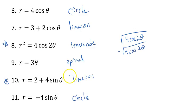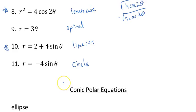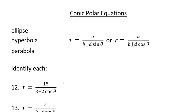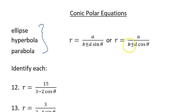Sometimes you may have to change your window — adjust x min, x max, y min, y max — to see these in your calculator. Now let's move on to conic sections, which you'll need for your final exam. Ellipses, hyperbolas, and parabolas can all be graphed in polar form. The equation looks like a fraction: a number on top, and a number plus or minus something times sine or cosine on the bottom.